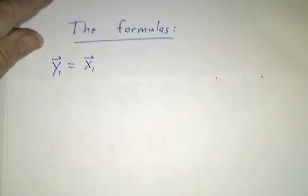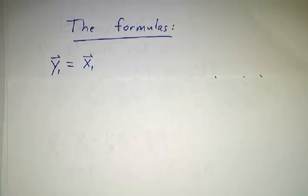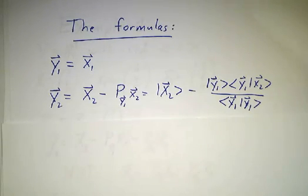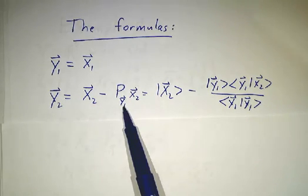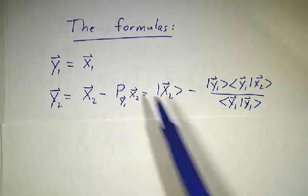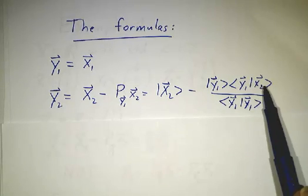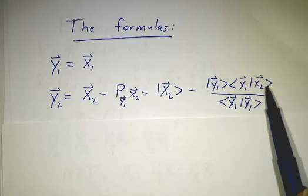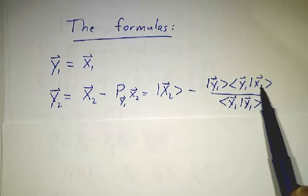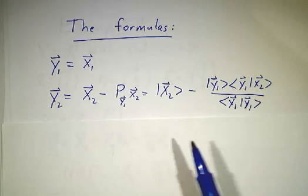That's a lot of pictures, but what are the formulas? Well, y1 is just x1, y2 is x2 minus the projection of x2 onto y1, and we've just learned how to do projections. We take x2 minus a constant times y1, and what's that constant? It's the inner product of y1 with x2 divided by the inner product of y1 with y1.